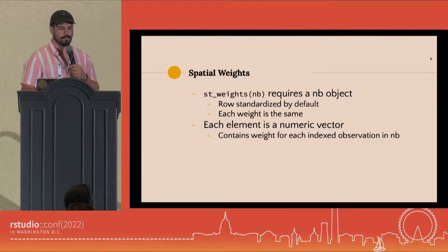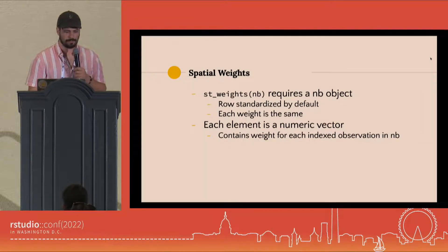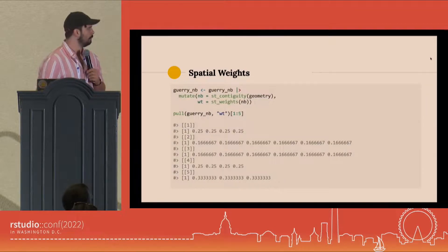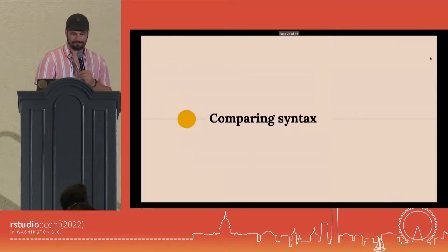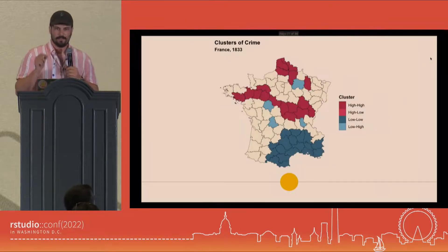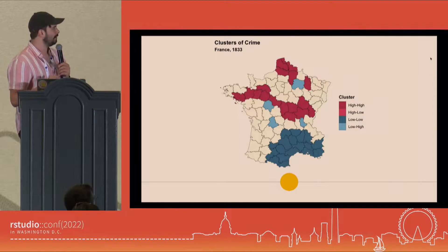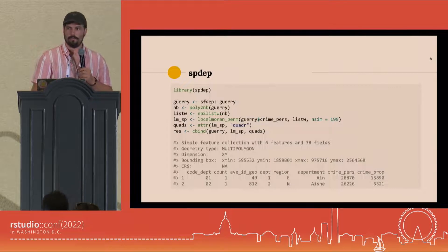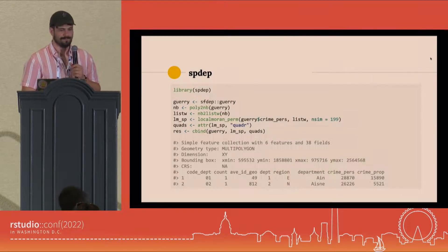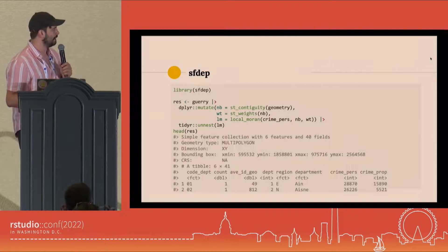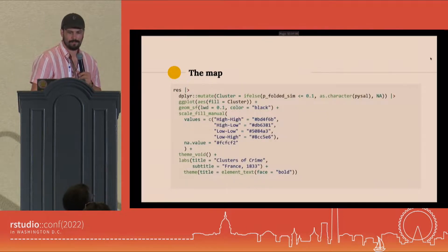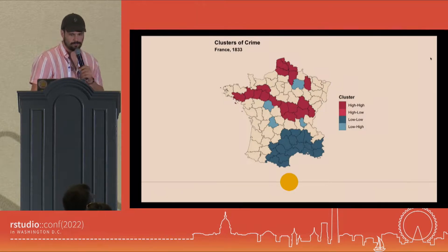If you want to use spatial weights, you just pass in the neighbor object and get row-standardized weights by default. Here's an example of doing all that in one mutate call. Let's compare the syntax. Here's a map comparing clusters of crime in 1830s France. Here's the code for spdep — no pipe operator and lots of assignments. Here's the same result using sfdep — one assignment and two pipe operators. Same map, different code, same results.